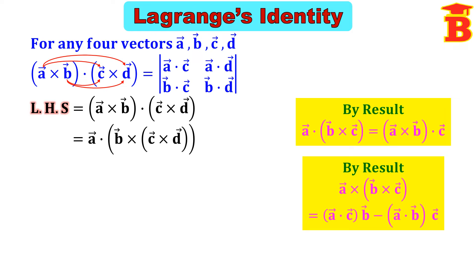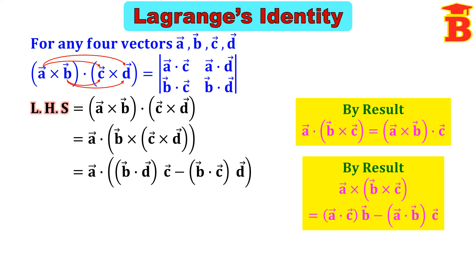We apply this formula carefully, labelling the vectors as 1, 2, 3. The first vector A remains the same. For the bracket, vector 1 is B, vector 2 is C, vector 3 is D. The formula gives: (1·3)×2 − (1·2)×3, that is (B·D)C − (B·C)D.